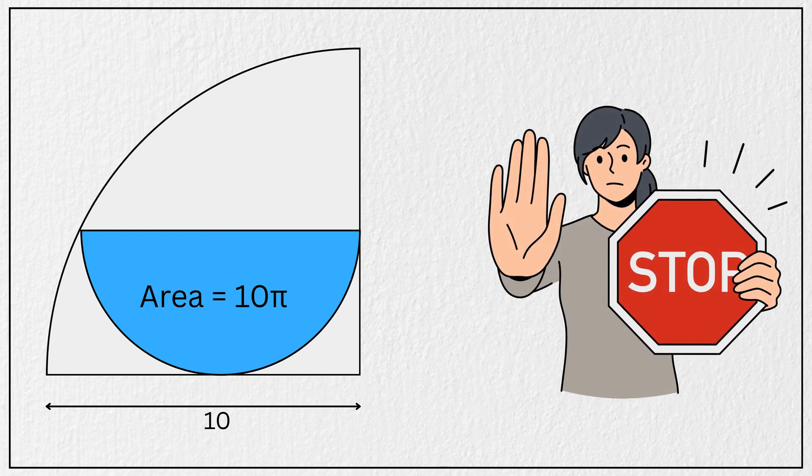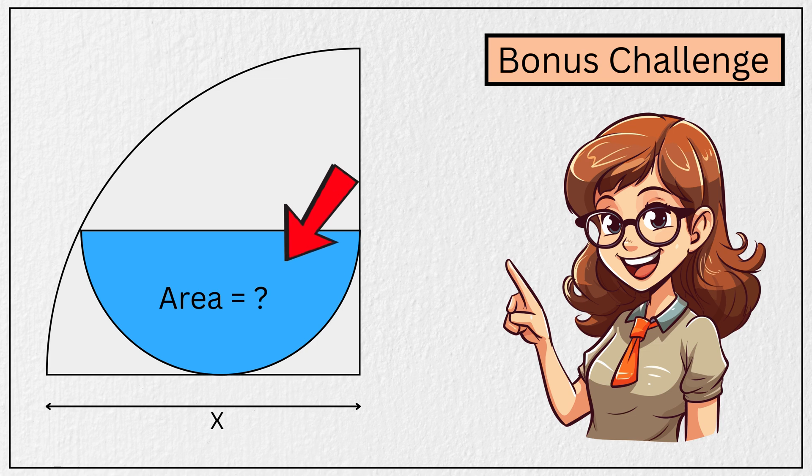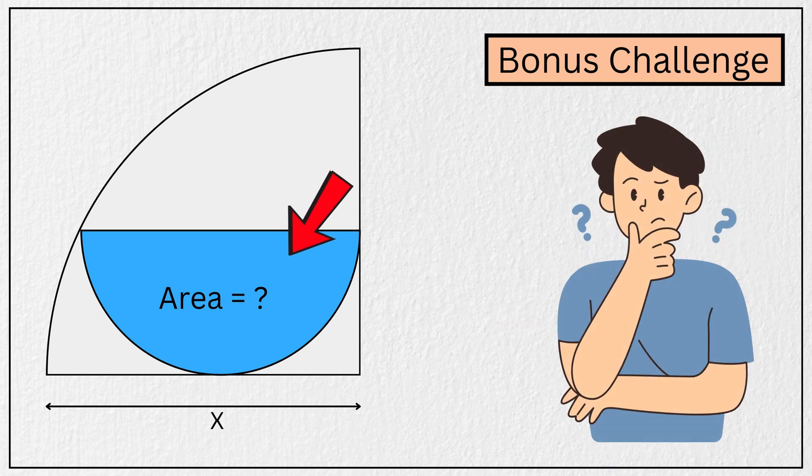Pretty neat, right? But wait, before you go, here is a bonus challenge. Can you find the area of this blue shaded semicircle in terms of variable x instead of a specific number? Think it through and share your answer in the comments below. Let us see who can figure it out.